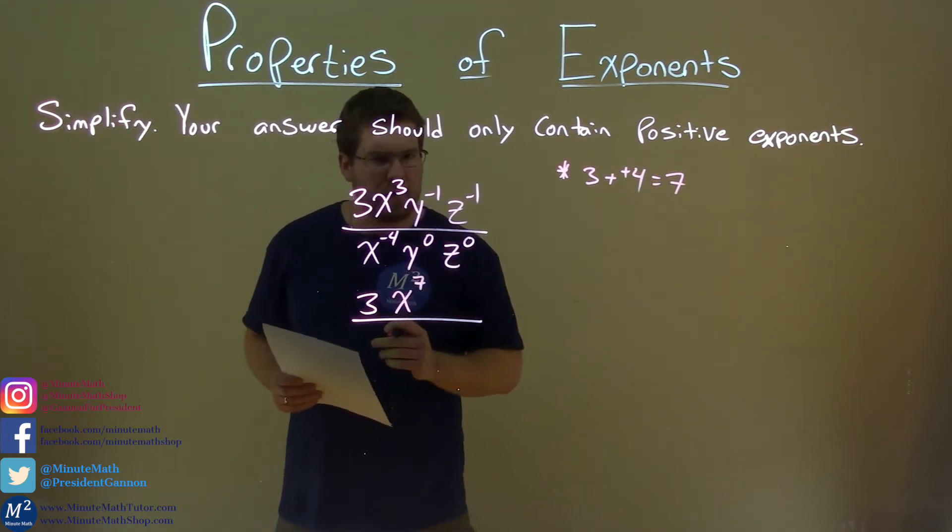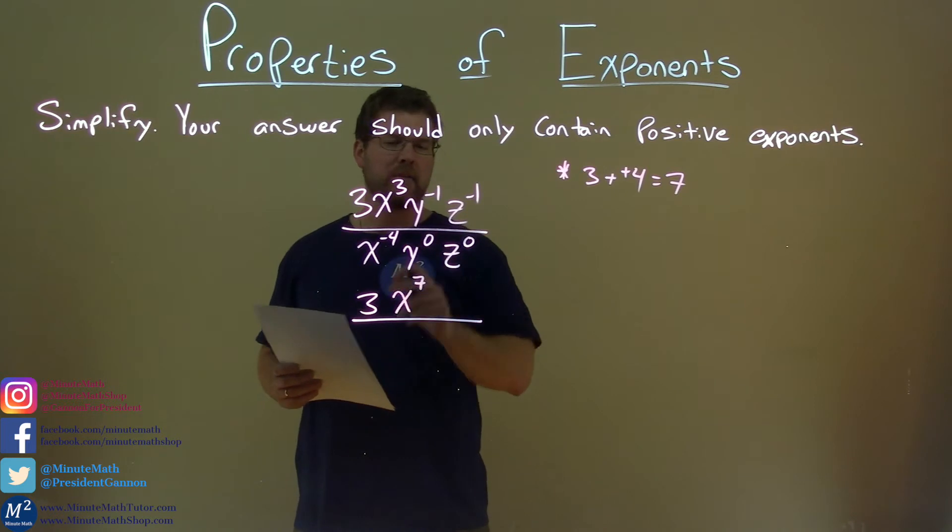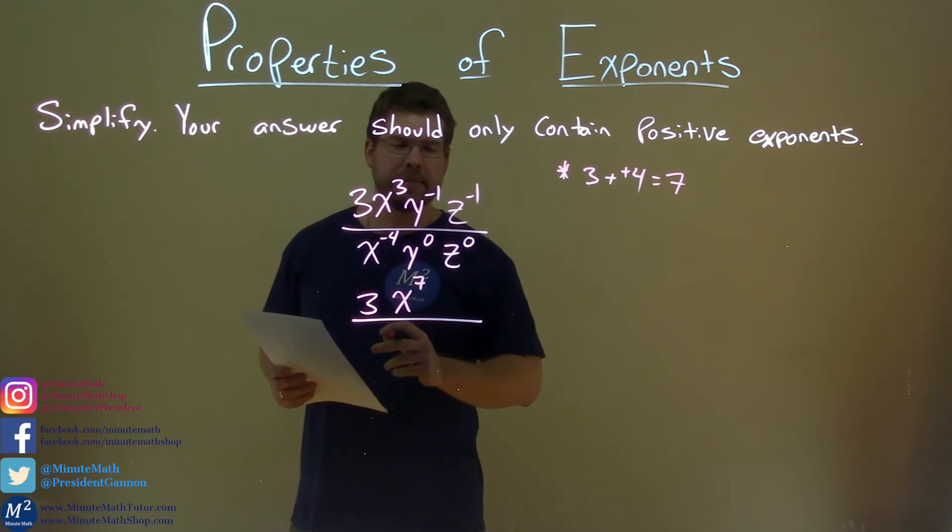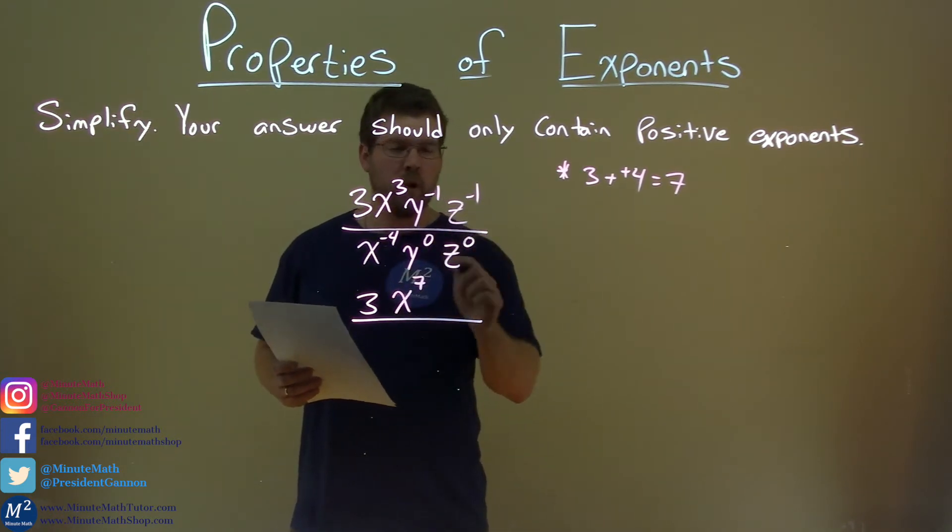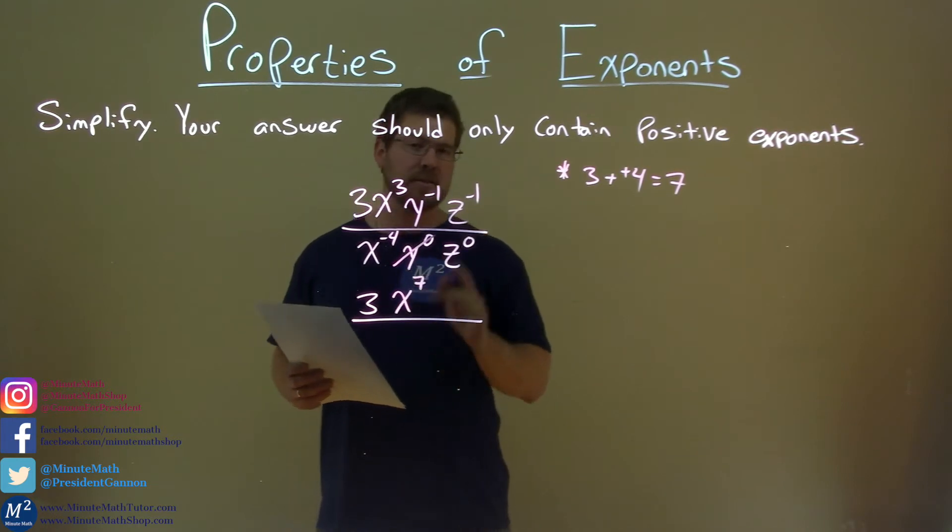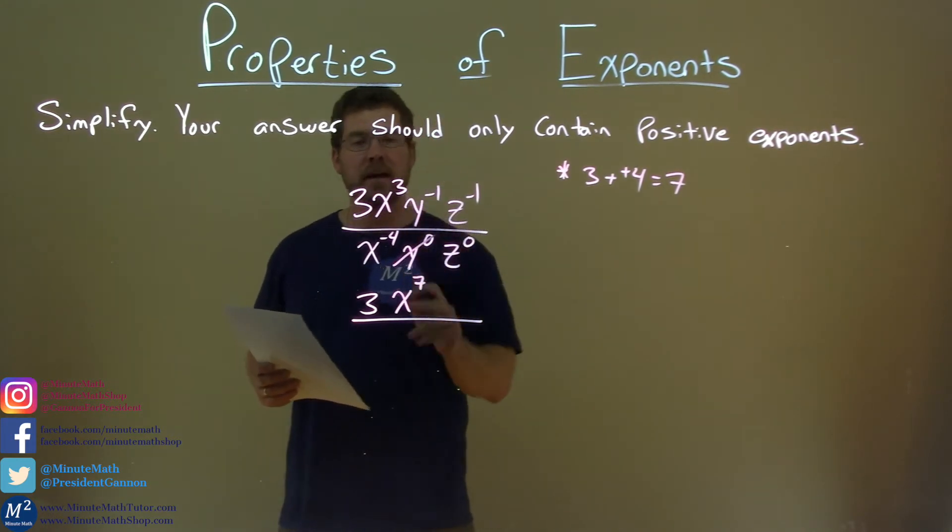Now, let's look at the y's. We have y to the 0 power. Well, y to the 0 power is just 1. We don't really need that there. It's there to trick us. So, we have y to the negative 1 power.